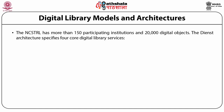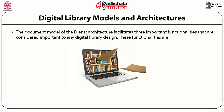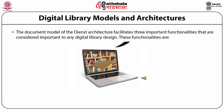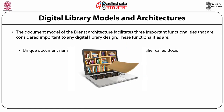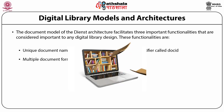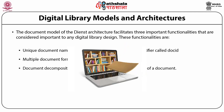The Danst architecture specifies four core digital library services: user interface services, repository services, index services, and collection services. The document model of Danst architecture facilitates three important functionalities: unique document names, a location-independent unique identifier called doc ID, multiple document formats such as ASCII, PS, and TIFF, and document decomposition — that is, physical and logical decomposition of a document.